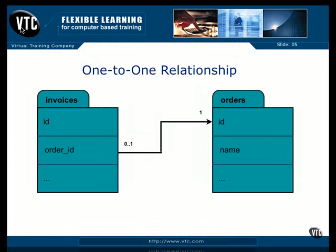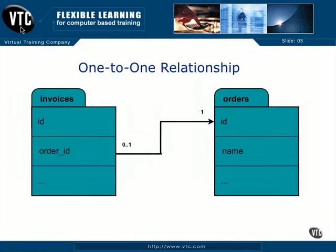The first model we're going to look at is a one-to-one relationship between two tables in your database and your two models, which would have the same corresponding relationship. In this case, I have two example tables — one of invoices and one of orders. The invoices would have rows with a unique ID for every row, and that row would also have an order ID, which corresponds to the ID of the particular order that invoice relates to. In database parlance, that field named order ID is called the foreign key.